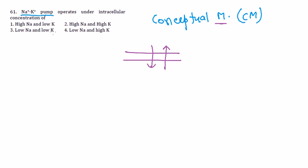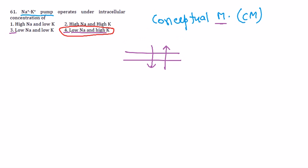We can narrow it down to options with low sodium. Since it's an antiporter, if sodium is at low intracellular concentration, potassium must be at high concentration on the other side. So low sodium and high potassium should be the correct option — that's option 4. Even with partial knowledge, applying the antiporter concept lets you derive the correct answer.